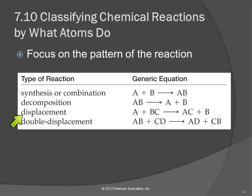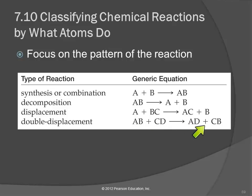A displacement — some books call this a single displacement. Let's talk about double displacement because we've talked about this already. This is the one where you have couple A and B going to the party and C and D going to the party and they end up switching partners — that's a double displacement reaction because two species, two ions are being displaced. So A came in with B, A leaves with D, so B got displaced; D came in with C, D got displaced and leaves with A — double displacement.